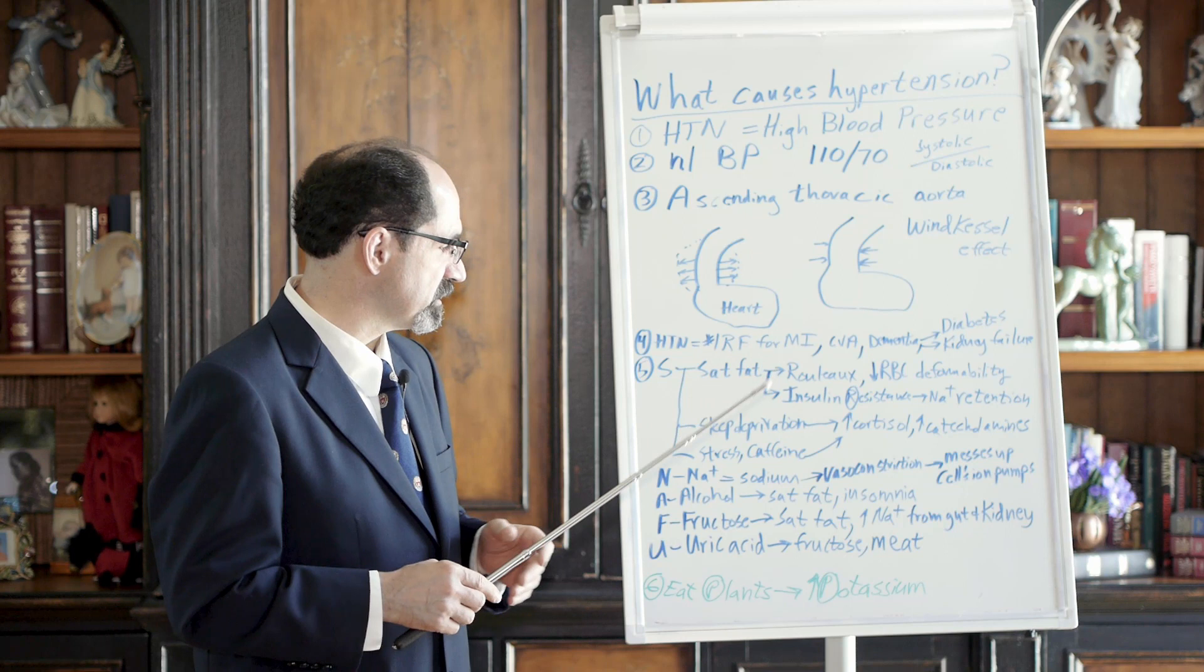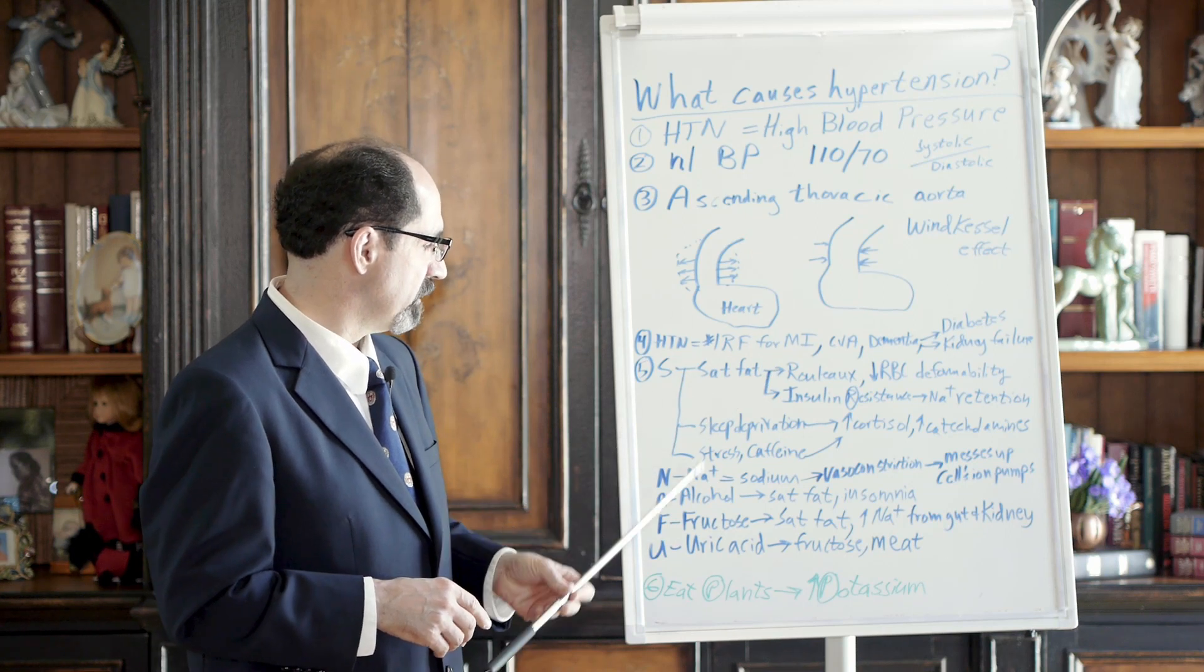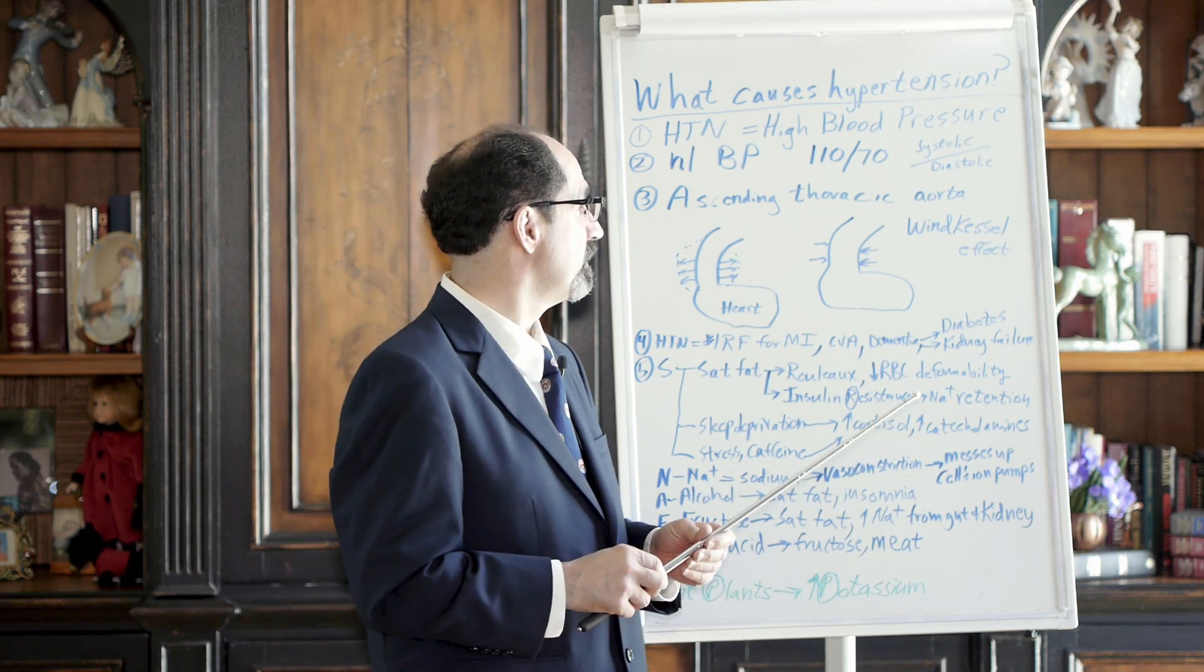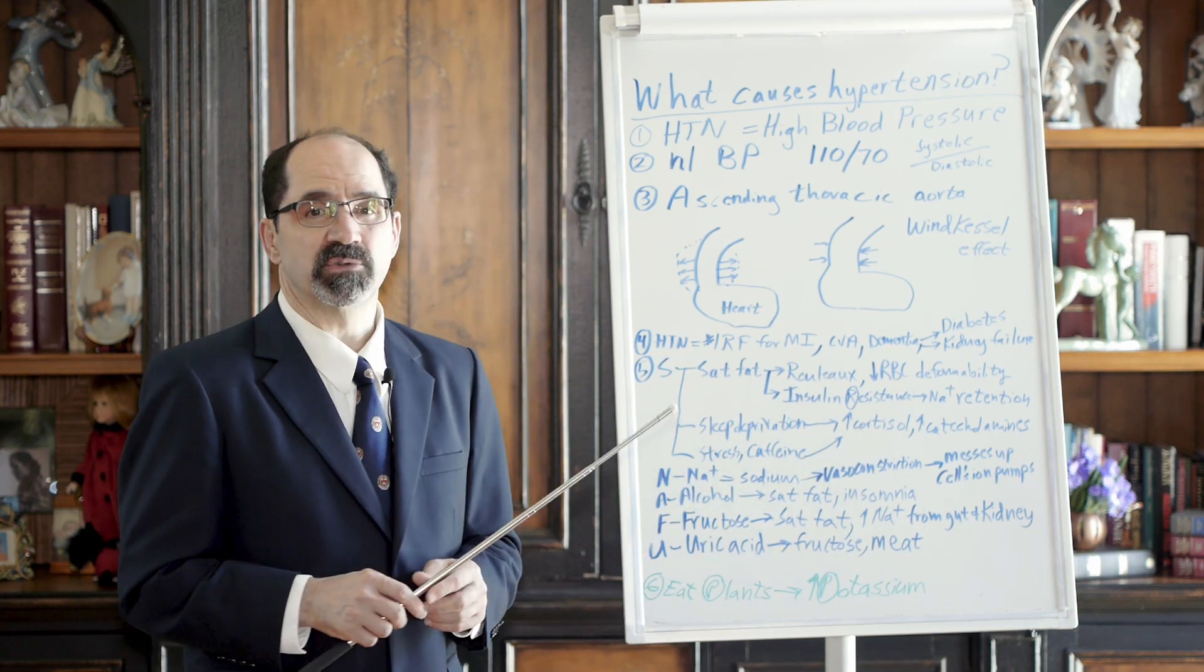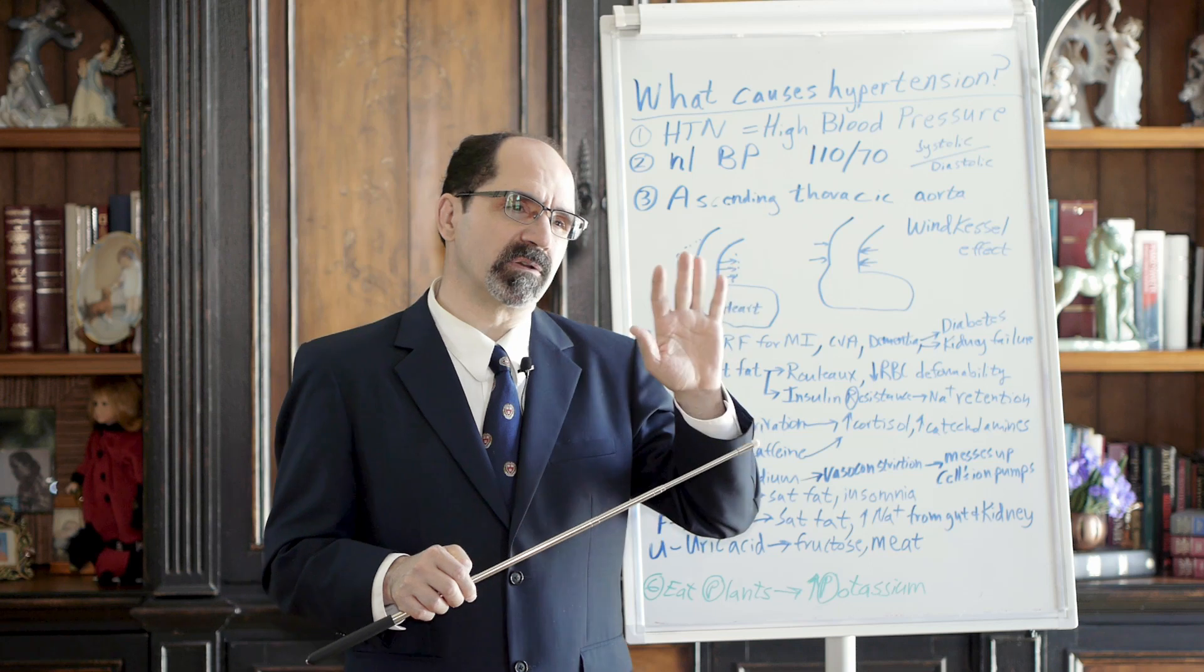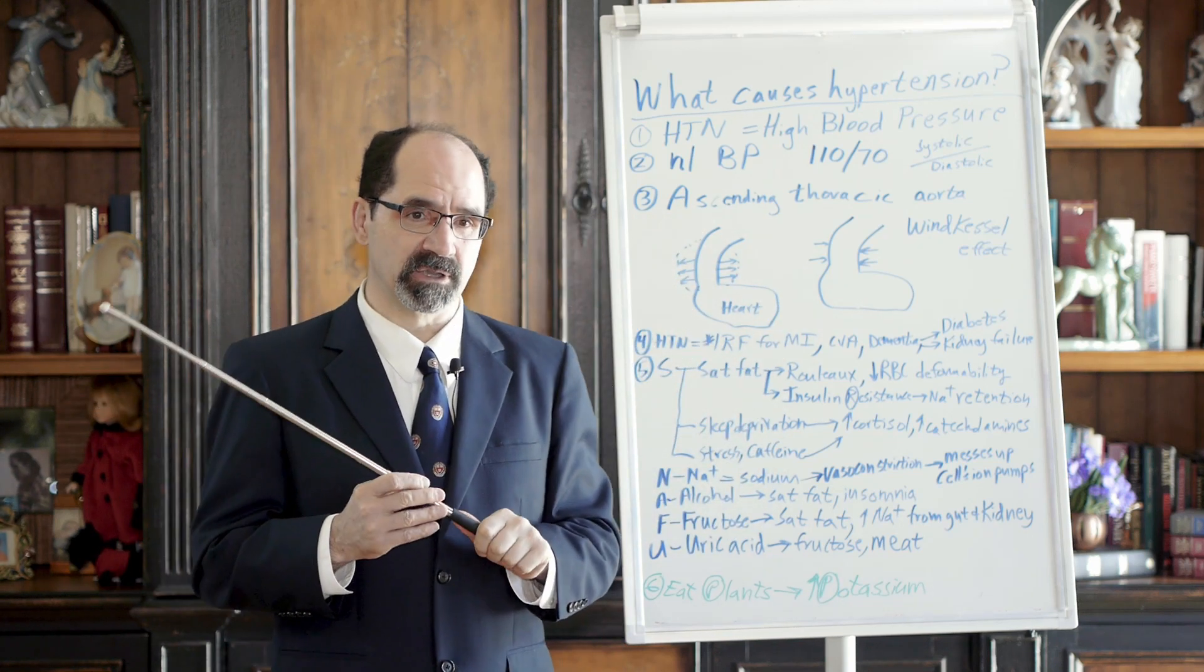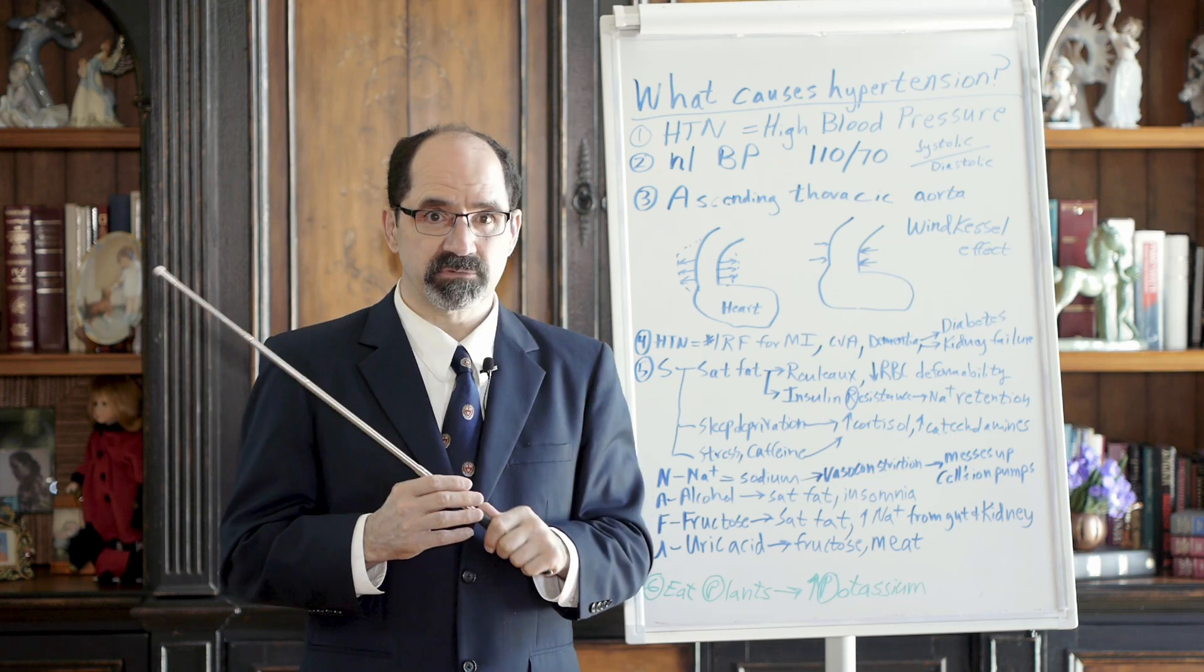So what's the solution? Avoid meat. Avoid fructose, alcohol. Avoid added salt. Eat plants to get your potassium. And those things will decrease your risk. We'll talk about the physiology more in a future lecture too. This will call this like part one of hypertension. But the bottom line is take it very seriously. Try to avoid it.